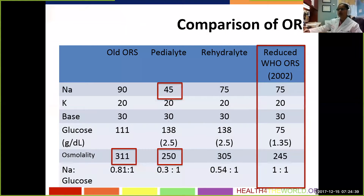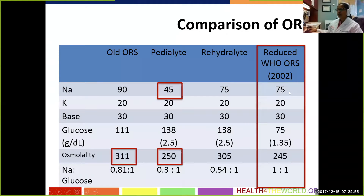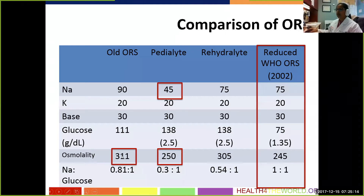To show you what ORS is and what it means — there are a lot of products available in the market. Currently what the WHO recommends is the ORS developed in 2002. The biggest difference is the sodium content. The current ORS has about 75 milliosmoles per dL. Pedialyte, or the old ORS, had about 90. Pedialyte is a common product available in the US and is slightly hypo-osmolar. The osmolality for the old ORS is 311, and the current one is 245. That's why the current ORS is called the reduced osmolality ORS, and that's what is currently recommended.